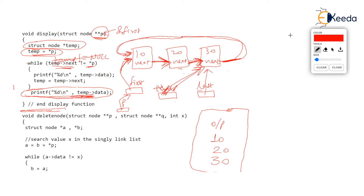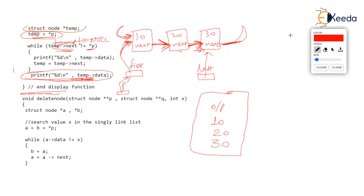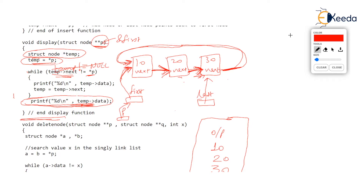The display function is done. Now I'm going to give you an idea of how to delete a node from this circular linked list. I'll explain the concept and then leave you to go through the delete node function code on your own. The delete node function will delete some value x from the list.